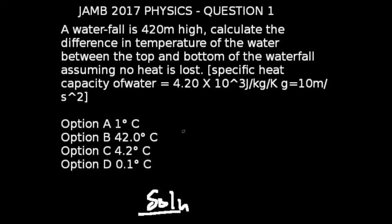Question one of the JAMB 2017 physics exams is what we are looking at. A waterfall is 420 meters high. Calculate the difference in temperature of the water between the top and bottom of the waterfall, assuming no heat is lost. Specific heat capacity of water is given as 4.20 times 10 to the power 3 joules per kilogram per kelvin, and our g is 10 meters per second squared.